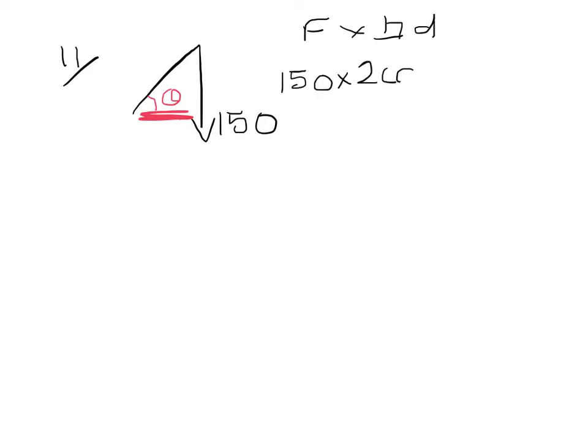Part 2 we are taking moments. So the first force we come to is the 150 and the perpendicular distance is adjacent to the angle so I am going to be using cos. So the moment which is force times perpendicular distance will be 150 times 2 cos theta which gives me 1500 over 13 and that is in a clockwise direction.